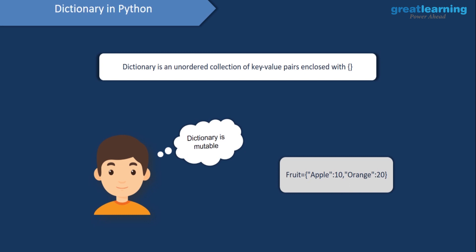A dictionary is an unordered collection of key-value pairs enclosed within curly braces, and a dictionary is mutable. So what exactly are key-value pairs? Let's see an example. We are creating a dictionary where we have two key-value pairs. The first key is apple, the second key is orange, the first value is 10, and the second value is 20. You can think of it as the name of the fruit and the quantity — apple with 10 apples and orange with 20 oranges.